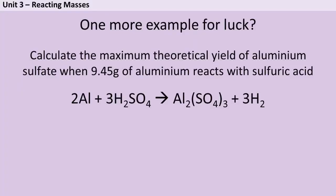Hopefully you followed that okay, but let's look at one more example just in case. Here we've been asked to calculate the maximum theoretical yield of aluminium sulfate when 9.45 grams of aluminium reacts with sulfuric acid. So first of all, don't panic. Maximum theoretical yield just means what is the most aluminium sulfate you could make. If this reaction goes perfectly, if we don't lose any in extraction, if we don't have any side reactions, we don't have any reversible reactions, how much aluminium sulfate should we make?